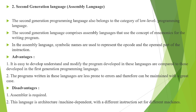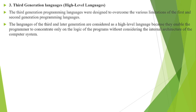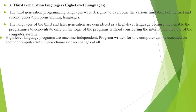The third generation programming languages were designed to overcome the limitations of the first and second generations. Although knowledge is still required, it is not as deep. Third generation and later languages are considered high-level languages because they allow the programmer to concentrate on the logic of the program without considering the internal architecture of the computer system.